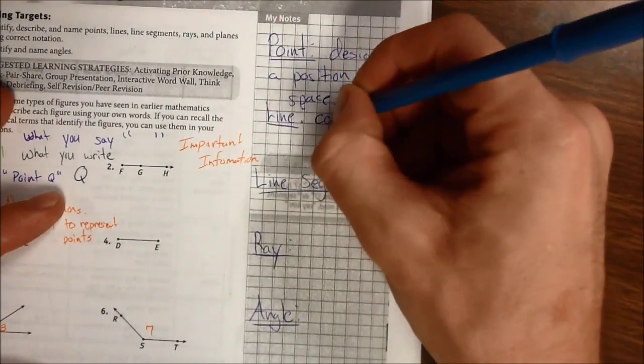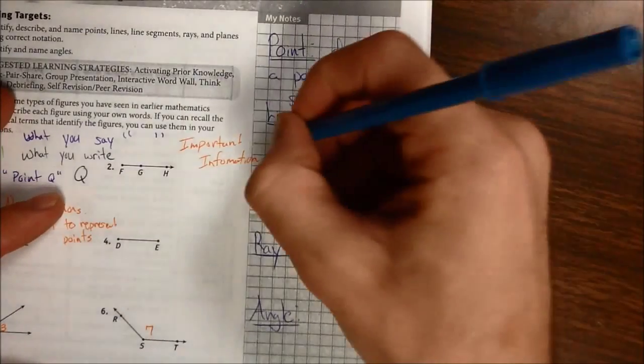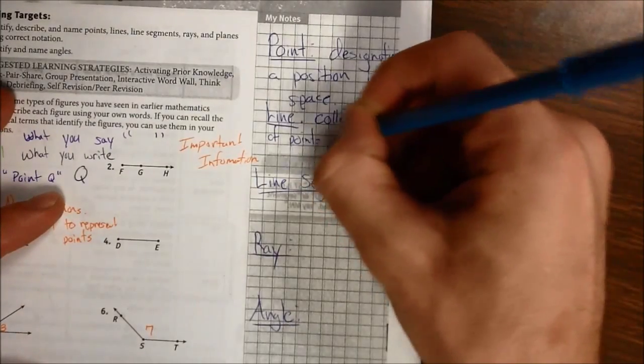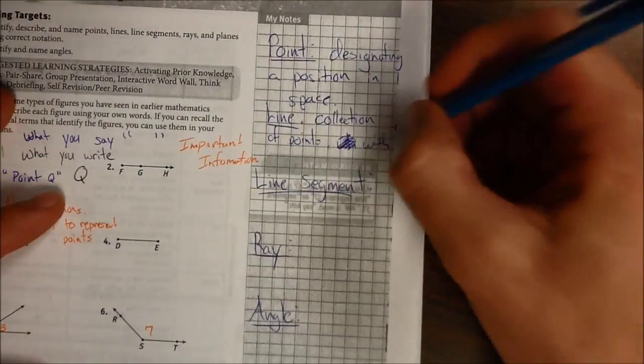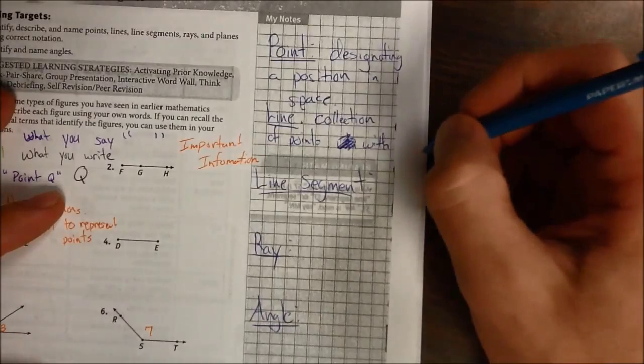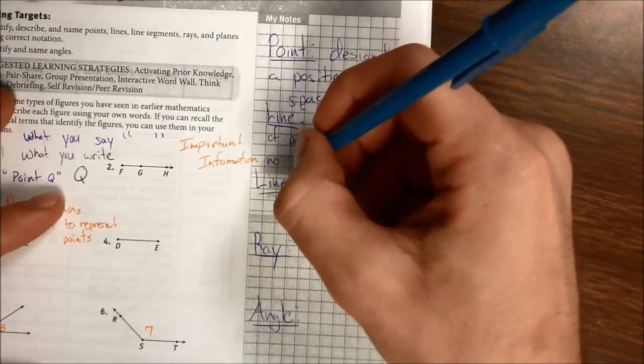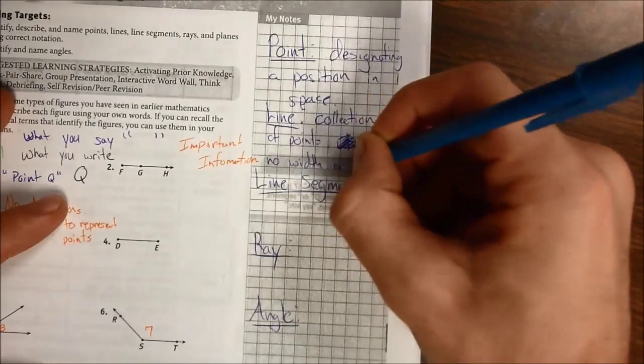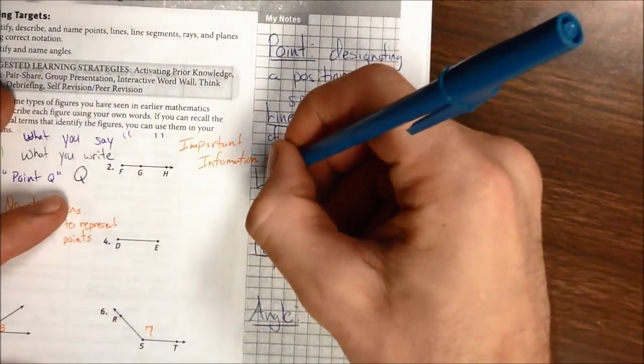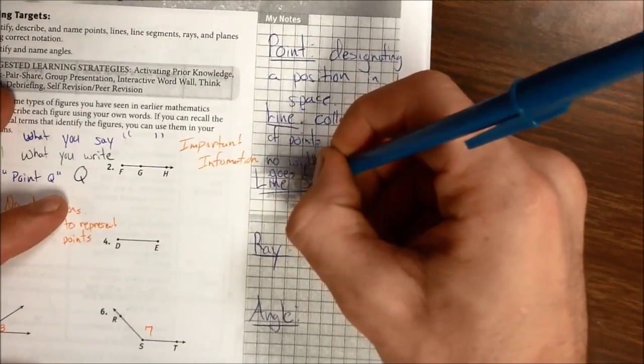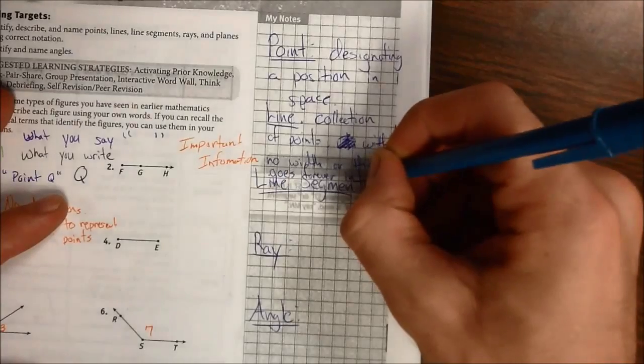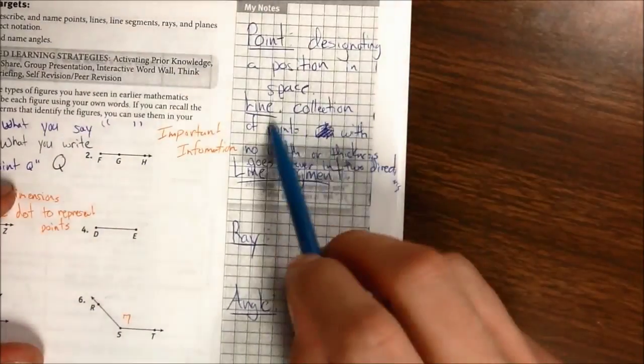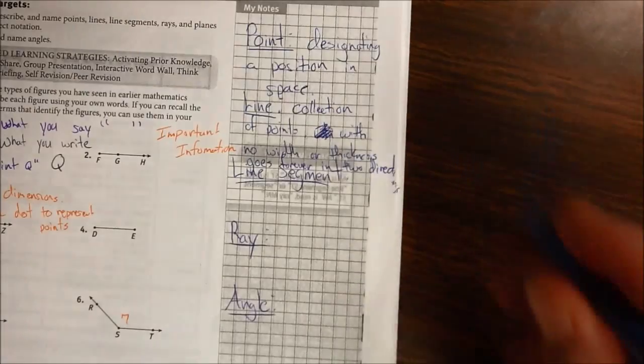A line is a collection of points with no width or thickness, goes forever in two directions.